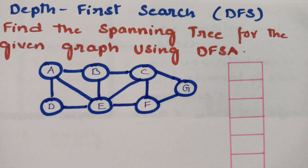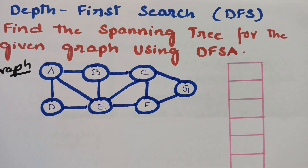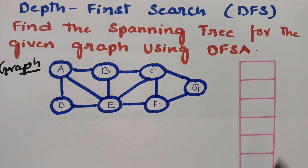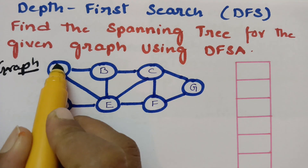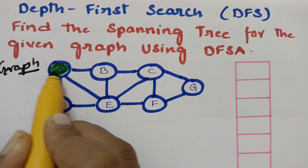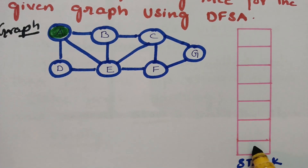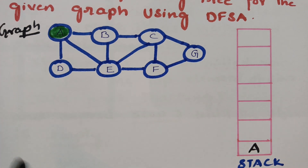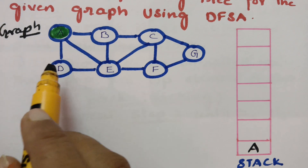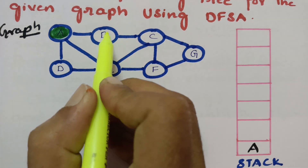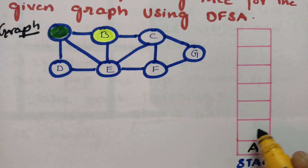Using depth first search algorithm, we have to find the spanning tree for the given graph. According to the first step, we take vertex A as the root vertex and push it into the stack. The adjacent vertices of A are B and D — we can select any one. I am selecting B, marking it as visited, and pushing it into the stack. After B, I am visiting C and pushing it into the stack.